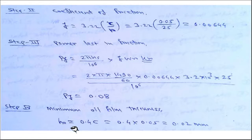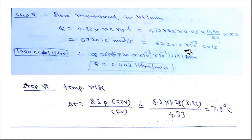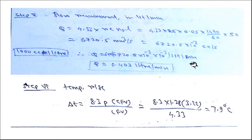The minimum oil film thickness: from the table, h₀/c = 0.4, so h₀ = 0.4 × c = 0.4 × 0.05 = 0.02 mm. For the flow requirement, using Q/(r·c·Ns·L) = 4.33, we get Q = 4.33 × r × c × Ns × L = 4.33 × 25 × 0.05 × (1490/60) × 50 = 6720.5 mm³/s. Converting to liters per minute gives Q = 0.403 L/min.